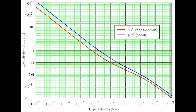Here's a plot of the resistivity of doped silicon. Resistivity is the inverse of conductivity, so lower resistivity means higher conductivity. N-type silicon is doped with phosphorus and P-type is doped with boron. As the doping density goes from about 10^12 per cubic centimeter up to 10^21, the resistance drops from about 10 kilo-ohm centimeters to less than a milli-ohm centimeter — a 100 million times change in resistance for a 1 billion times difference in impurities.